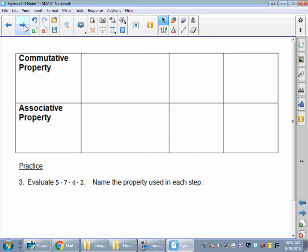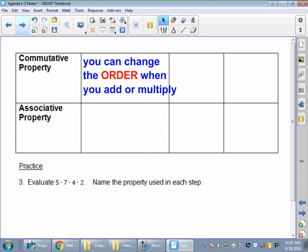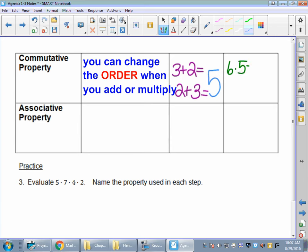Commutative property says when you add or multiply, you can change the order. So for example, 3 plus 2, how about 2 plus 3? Do we get the same answer either way? Did it matter what order we did that adding in? What about 6 times 5? What about 5 times 6? Did it matter what order? We still get a big old 30. So commutative says we can change the order.